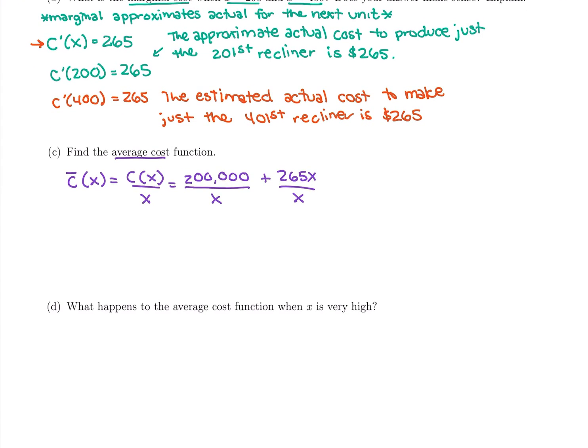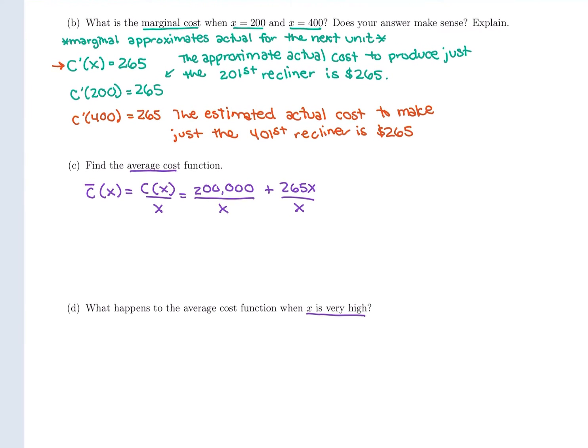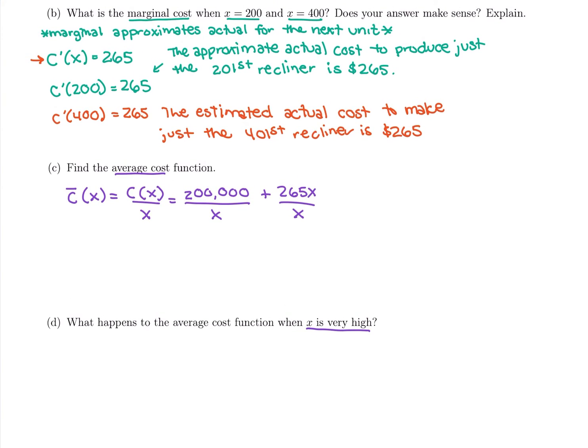So the next part says what happens to the average cost when x is very high. So when x is very high, it gets a very big x number, you want to produce more and more, what's going to happen to your average cost of each recliner. When we have this problem we're going to kick it back to exam 1 material.